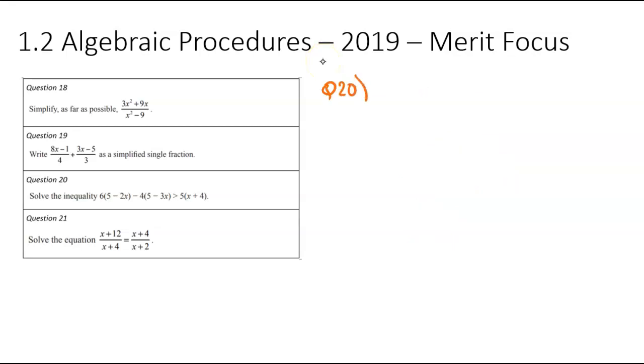Now on to question number 20. And this is a fairly typical merit question. I've got two fractions. I've been asked to write that as a single fraction. So I'm just going to start by jotting down the question. 8x minus 1 over 4 plus. And I guess that plus is really important because it tells you we're using the crisscross smiley face method. And then the second fraction, 3x minus 5 over 3.